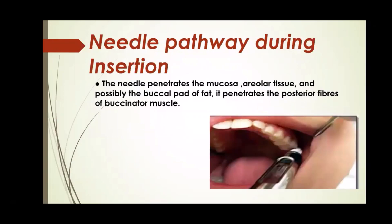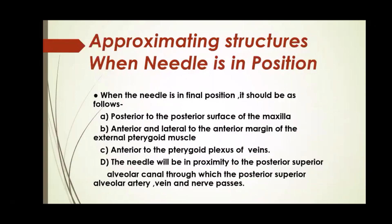Needle pathway during insertion: the needle penetrates the mucosa, alveolar areolar tissue, and possibly the buccal pad of fat. It then penetrates the posterior fibers of the buccinator muscle. When the needle is in position, it should be posterior to the posterior surface of the maxilla, anterior and lateral to the anterior margin of the external pterygoid muscle, and anterior to the pterygoid plexus of veins. The needle will be in proximity to the posterior superior alveolar canal, through which the posterior superior alveolar artery, vein, and nerve pass.